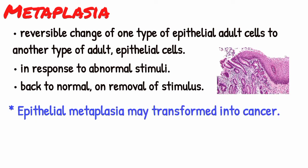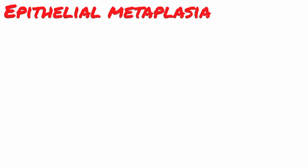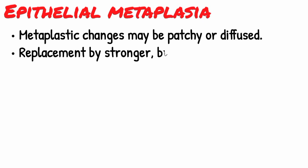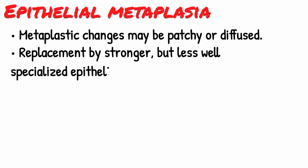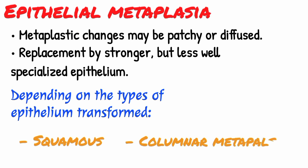Metaplasia is broadly divided into two main types: epithelial and mesenchymal metaplasia. Epithelial metaplasia is the more common type, in which metaplastic changes may be patchy or diffused, and usually result in replacement by stronger but less well-specialized epithelium. Depending on the types of epithelium transformed, two types of epithelial metaplasia are seen: squamous and columnar metaplasia.